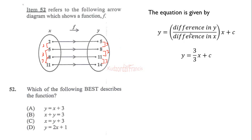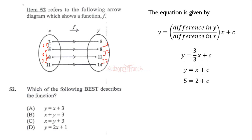So the equation will be y equals the change in y over the change in x, which is 3 over 3, giving us 1, so y equals x plus c. We pick the first point: when x equals 2, y equals 5. Solving for c gives c equals 3, so y equals x plus 3. The correct answer is option A.